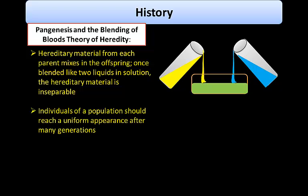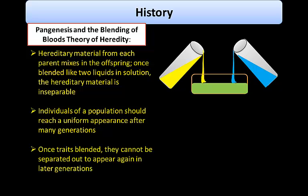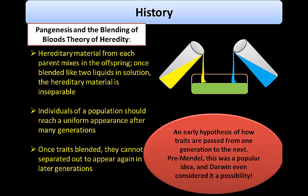This was an early hypothesis of how traits are passed from one generation to the next. Pre-Mendel, this blending of blood theory of heredity was a popular idea, and even Darwin considered it as a possibility.